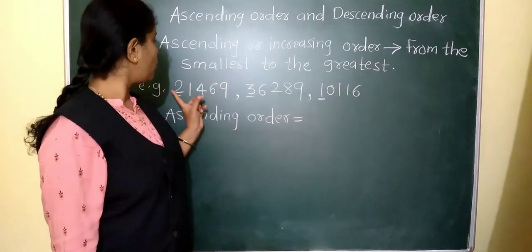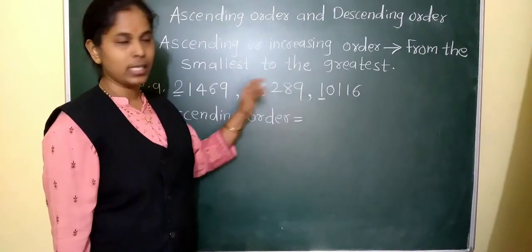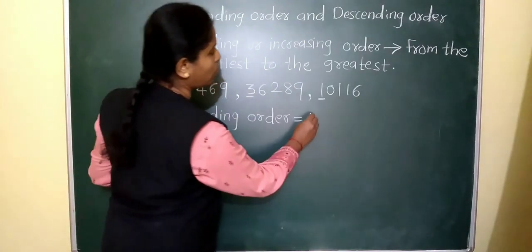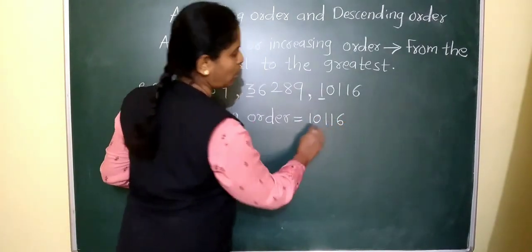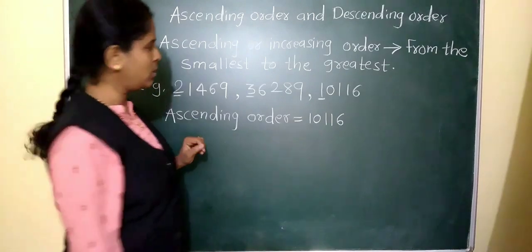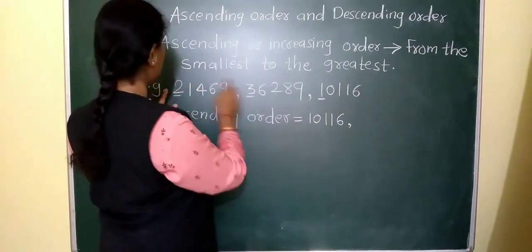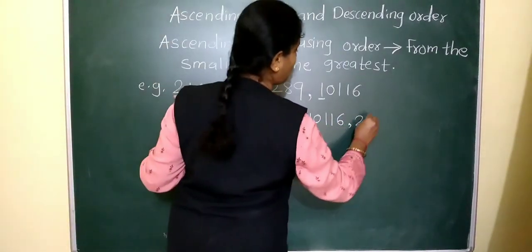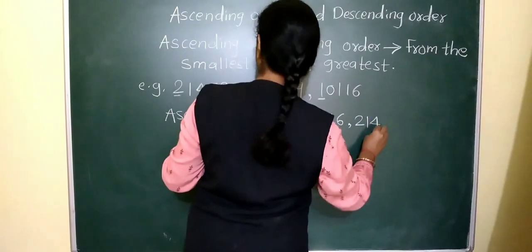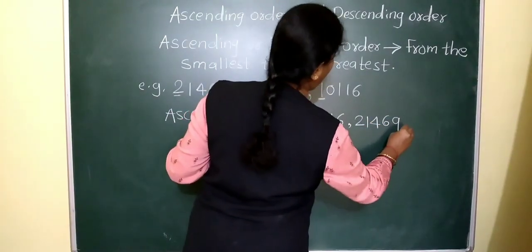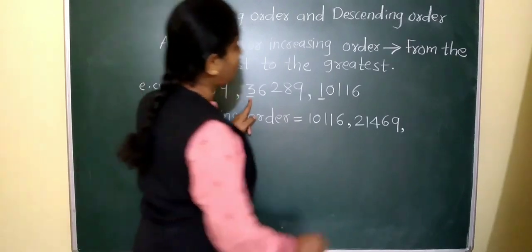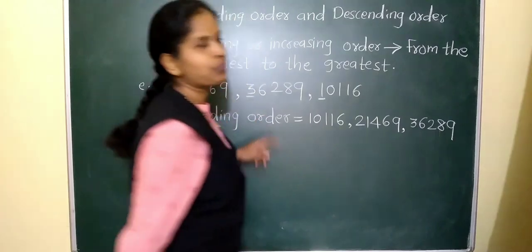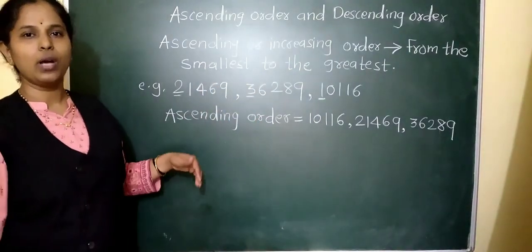By looking at the first place only, here 2 is there, here 3 is there, here 1 is there. So 1 is smallest, meaning 10,116 will come first. After that, 2 is greater than 1, so 21,469 will come at the second place. And the greatest number is 36,289.